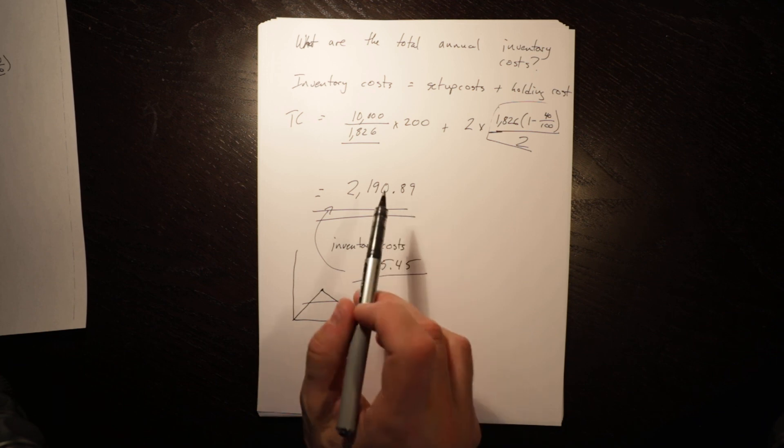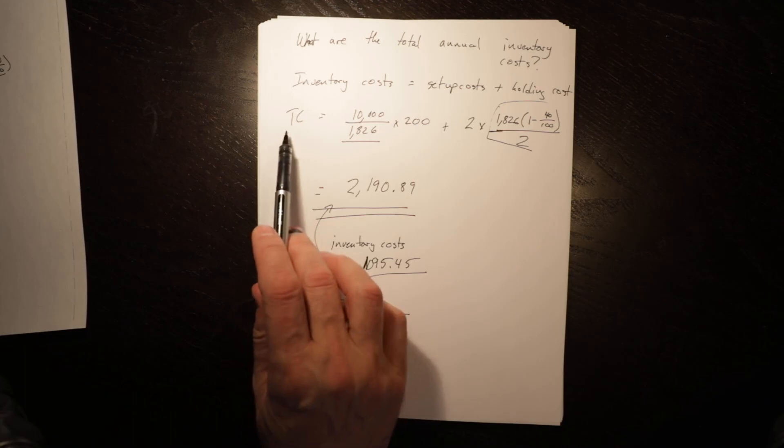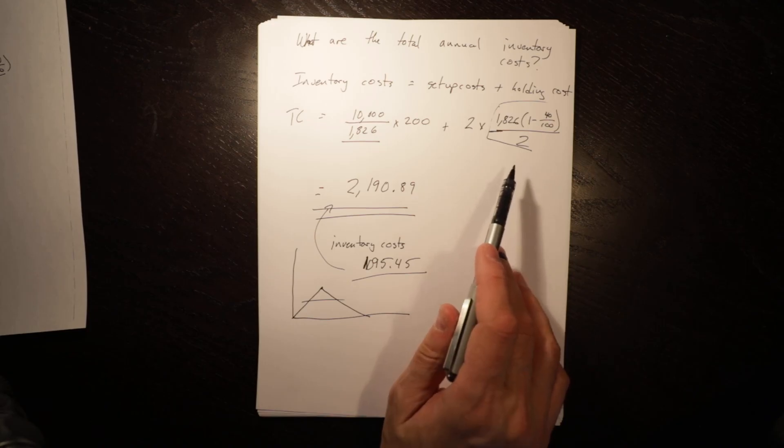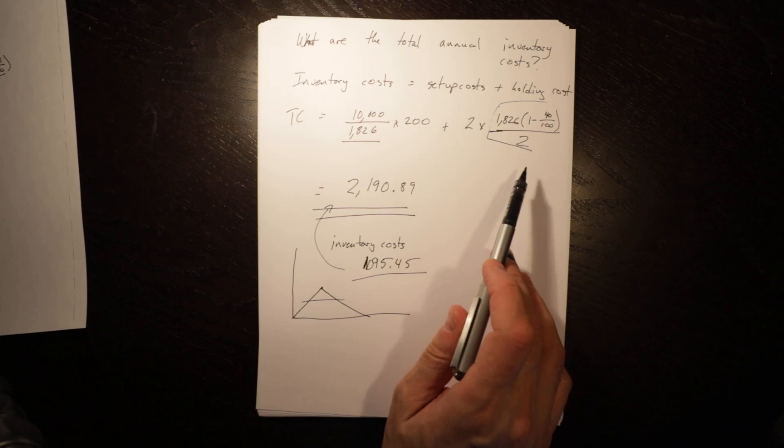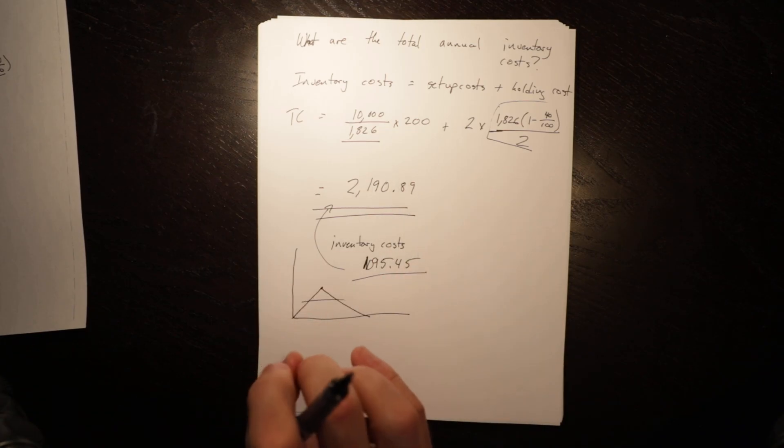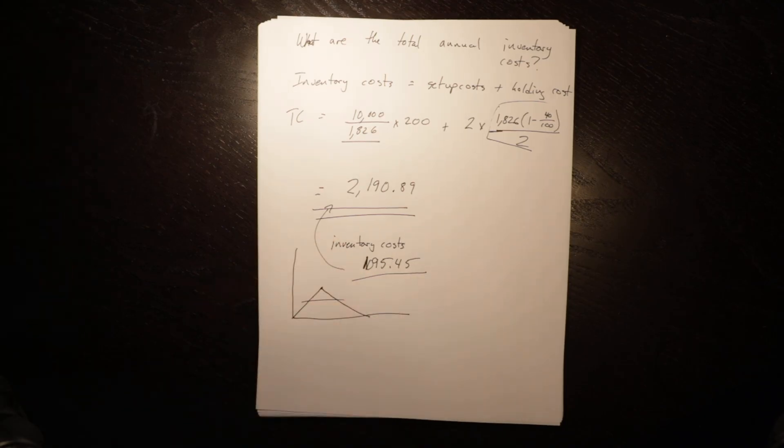So if you ever got a question, here's total costs, or you didn't get total costs, you said holding costs for an EOQ model or a POQ model is 400, what are the setup costs? You would know that it is 400 and you wouldn't have to do any calculations, even if you don't get all of the information. So that is a quick introduction to production order quantity, and I'd encourage you to watch the other videos to get a fulsome understanding.